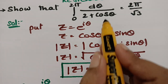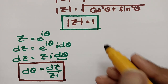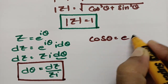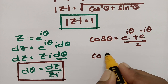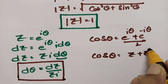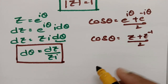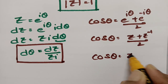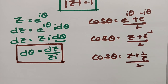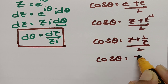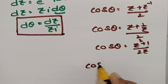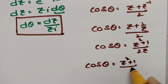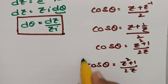Next we need cos θ. We know cos θ = (e^(iθ) + e^(−iθ)) / 2, which equals (z + z⁻¹) / 2 = (z + 1/z) / 2. Therefore cos θ = (z² + 1) / (2z).